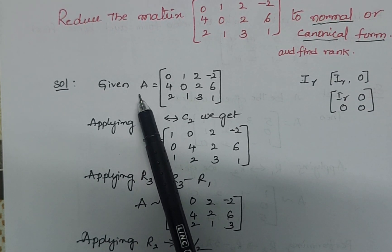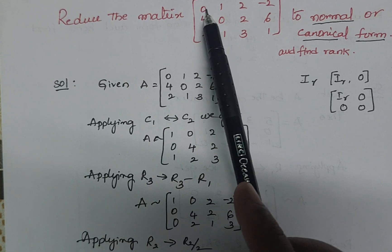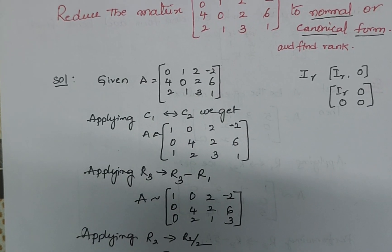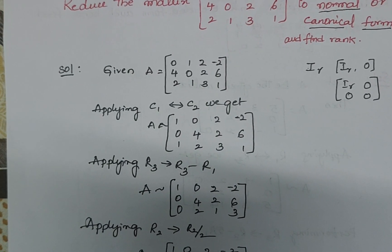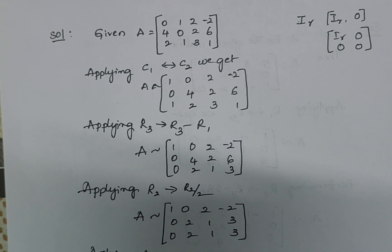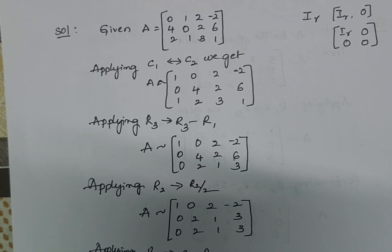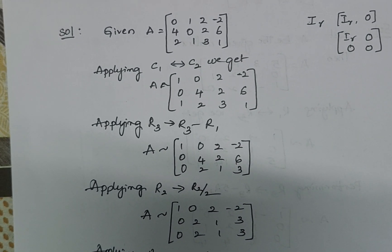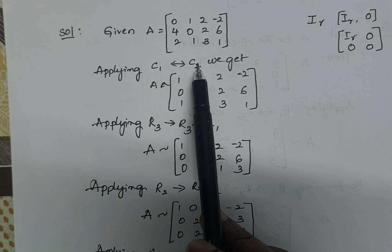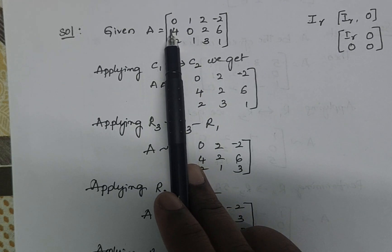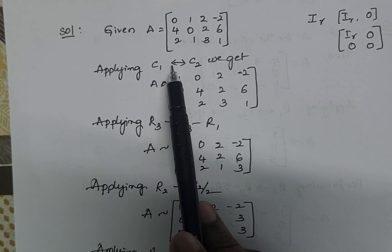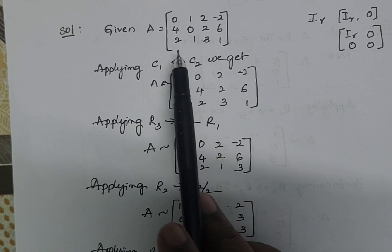Here, given A equals this matrix. To reduce the matrix into normal form or canonical form, we can use both column and row operations. Here I am using column operations — I am interchanging the first column and second column: C1 ↔ C2.